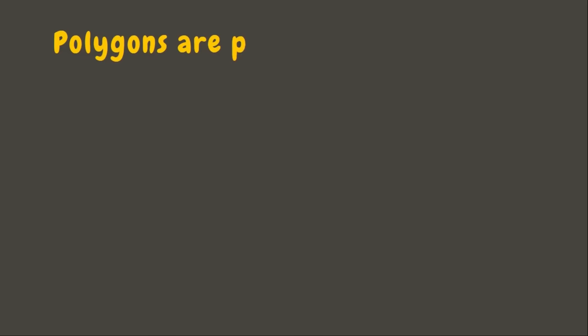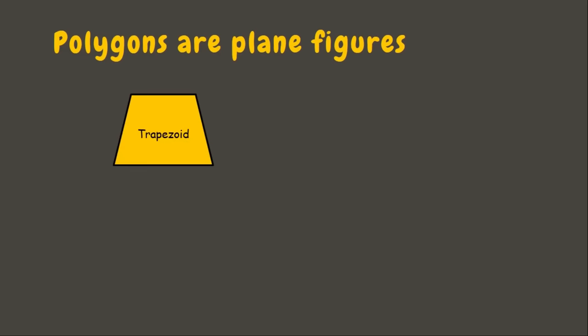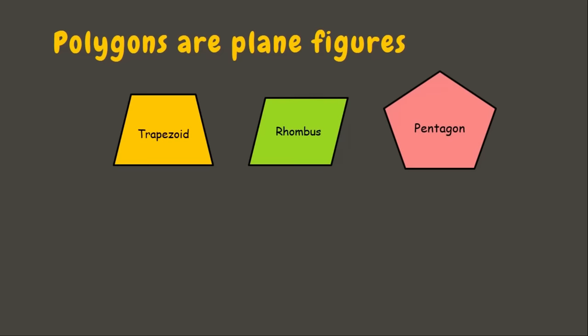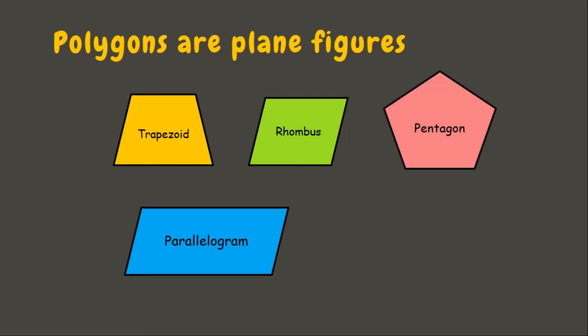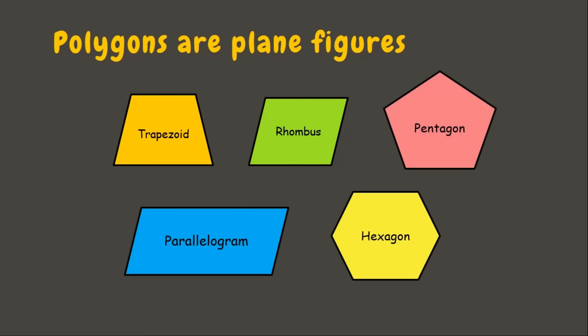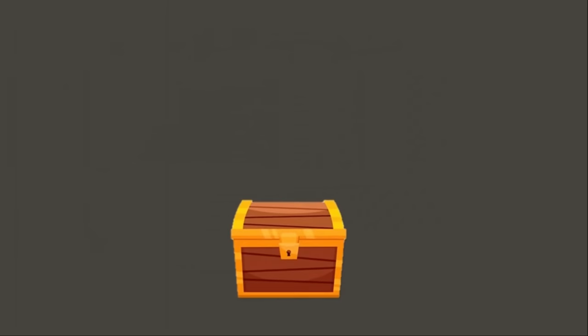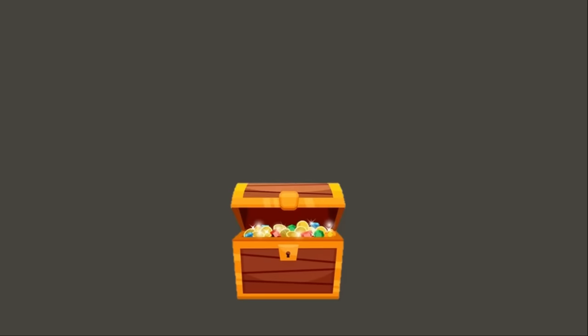Polygons are also considered as plane figures. Here are some examples: we have trapezoid, rhombus, pentagon, parallelogram, hexagon, and many more. Now let's move on to our next treasure hunt.